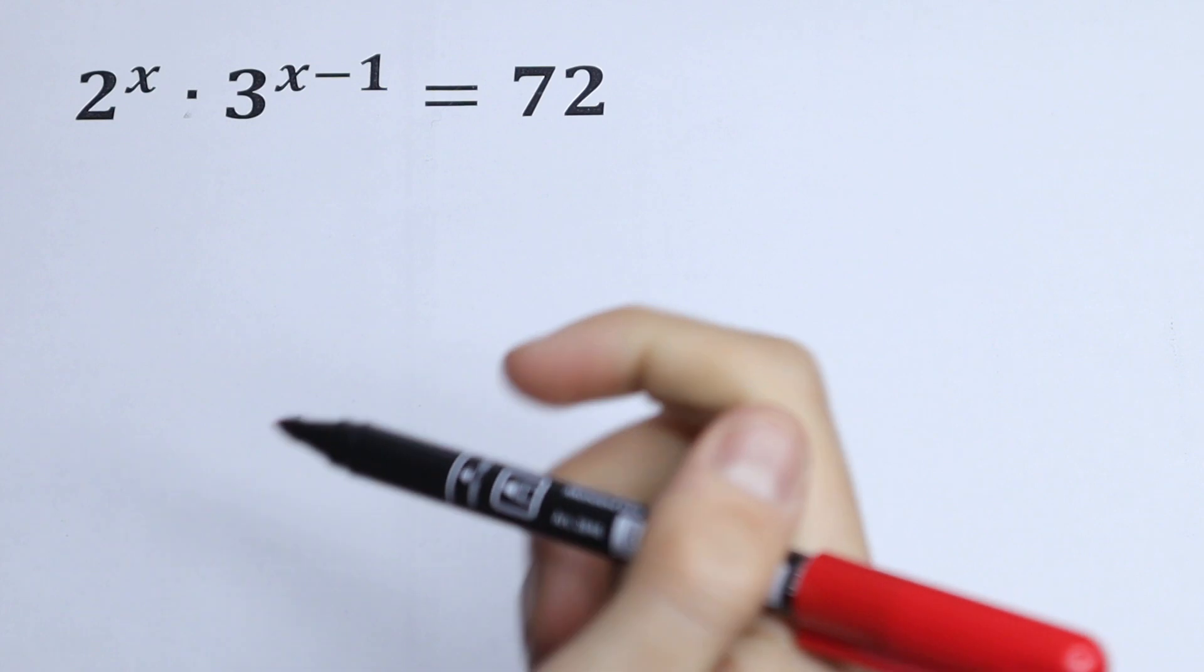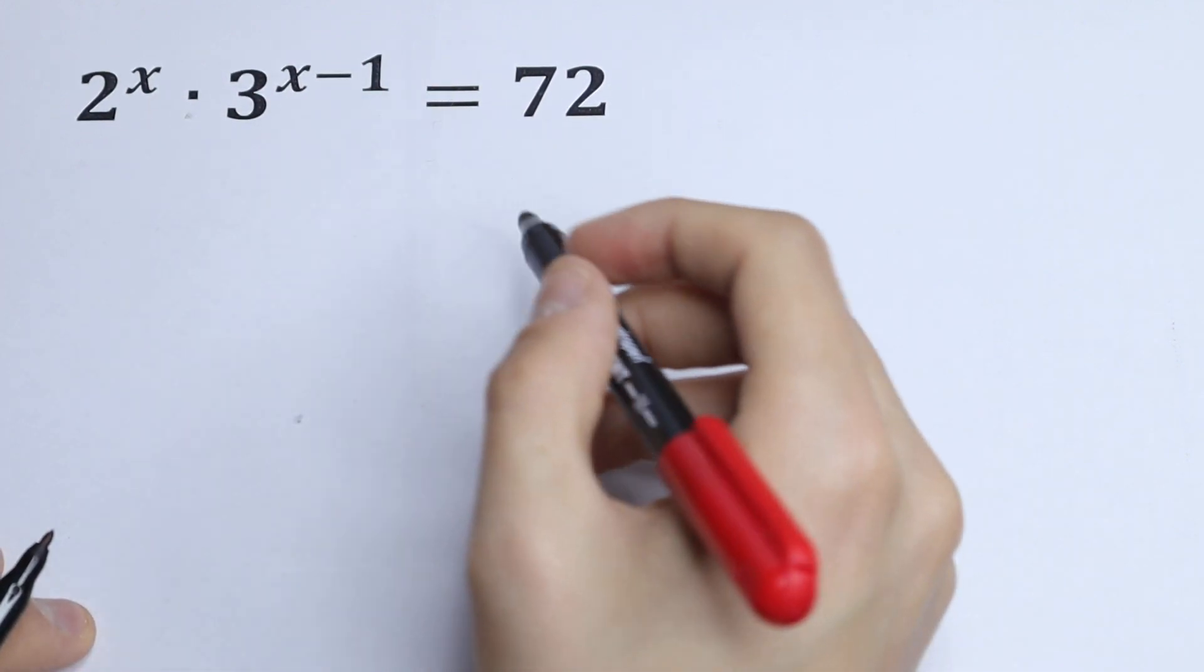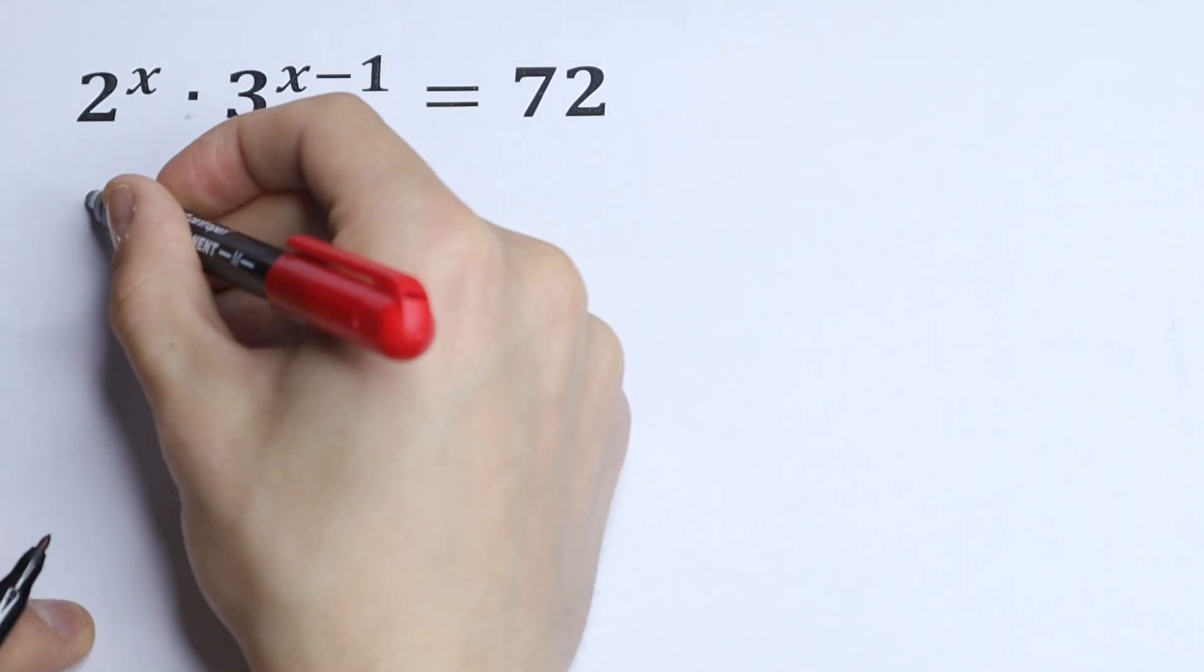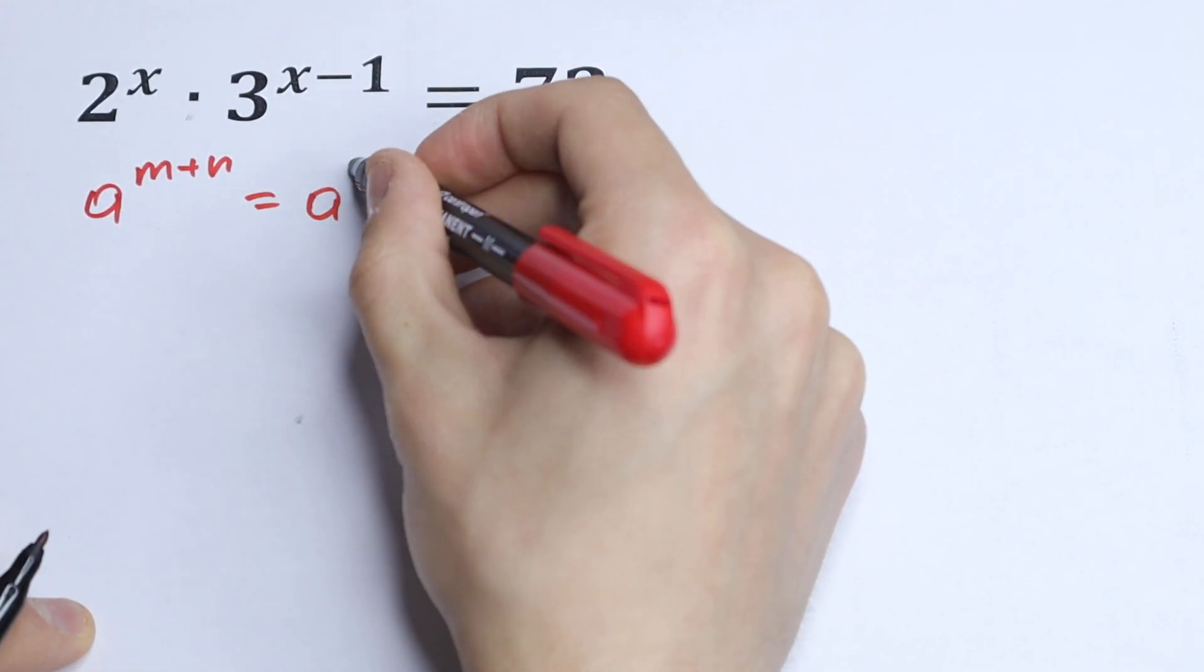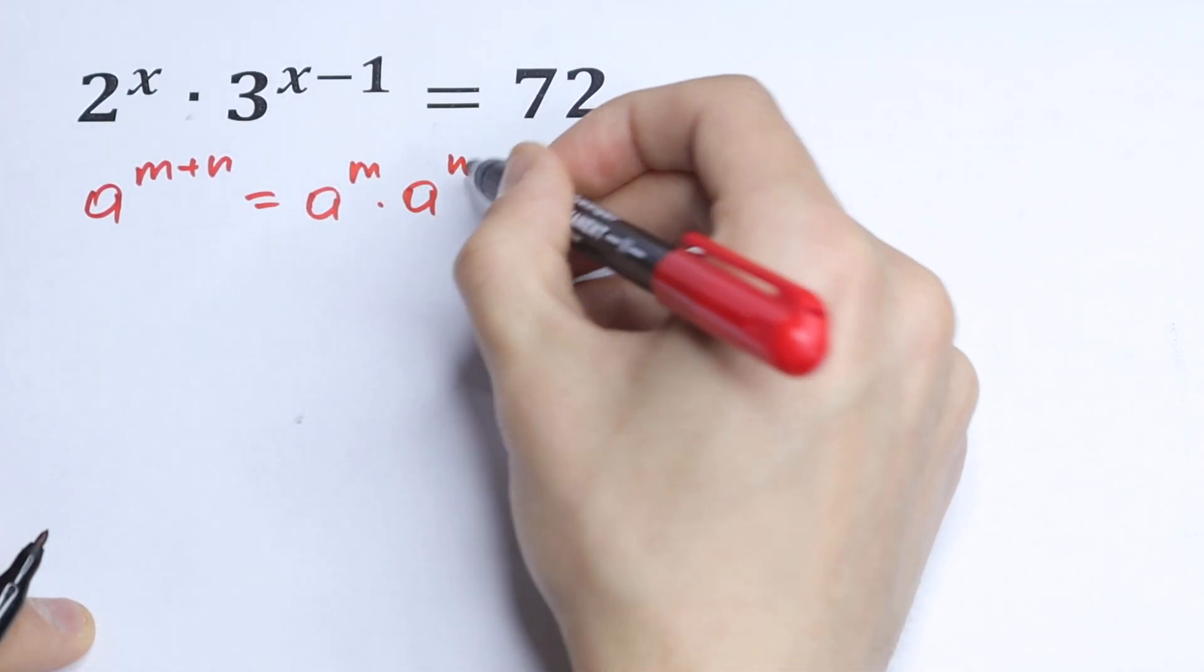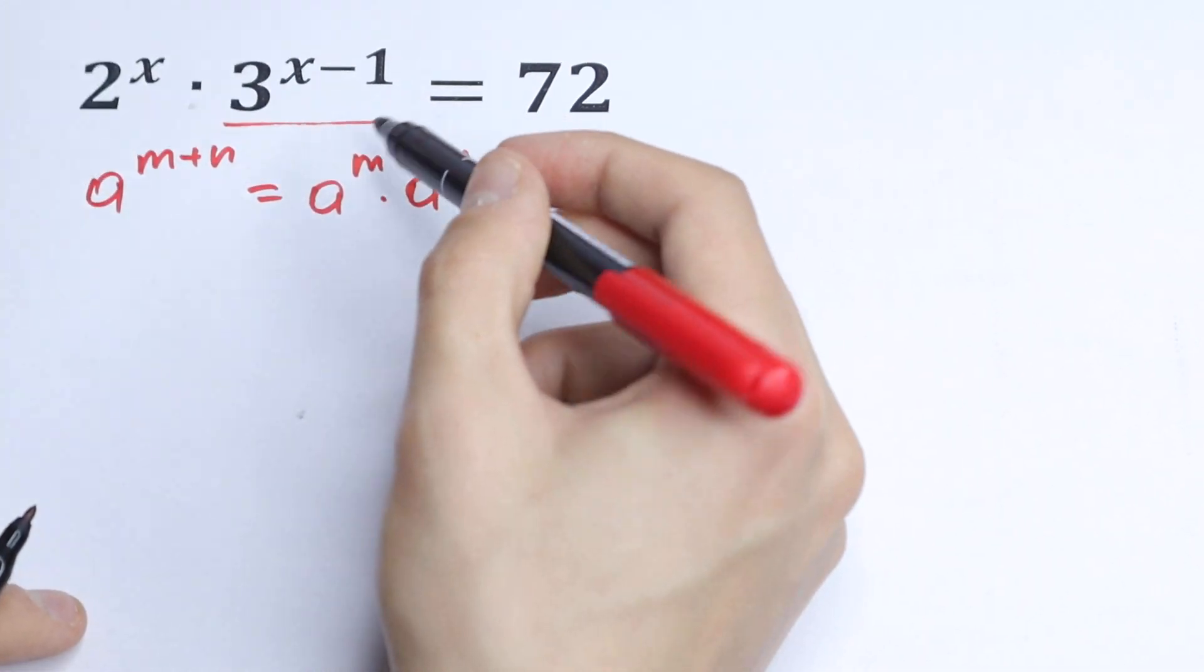How can we solve this? We can simplify this 3 to the power x minus 1 a little bit, because we know if we have a to the power m plus n, we can write it as a to the power m times a to the power n. So we can simplify this using this rule.